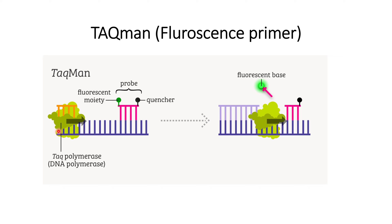During the annealing step, the primer binds and DNA polymerase starts to add nucleotides based on the single-stranded DNA sequence. When it reaches the TaqMan primer, it removes the bases. As soon as the fluorescence-conjugated base is removed, the distance between the quencher and the fluorescence base increases, resulting in a fluorescent signal that can be measured. This helps in the quantification of the DNA formed from the PCR reaction — that is the strategy people use to quantify DNA with the TaqMan primer.